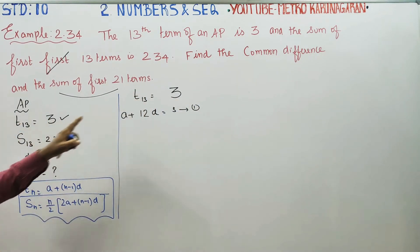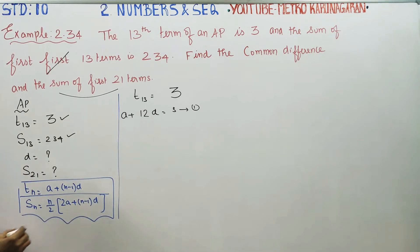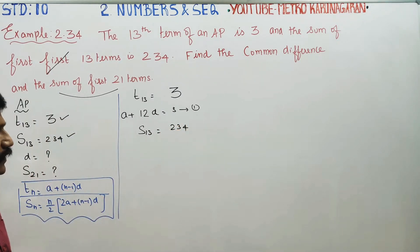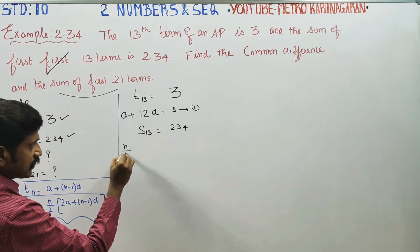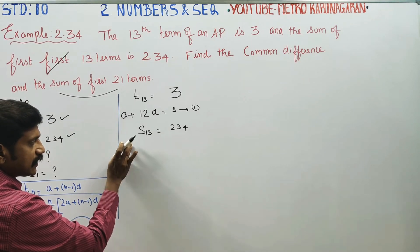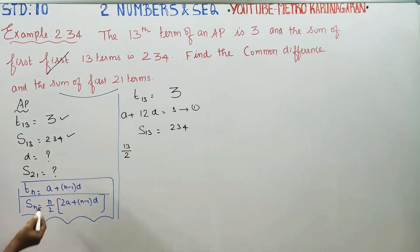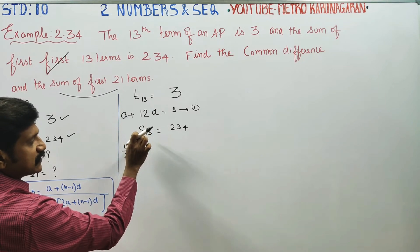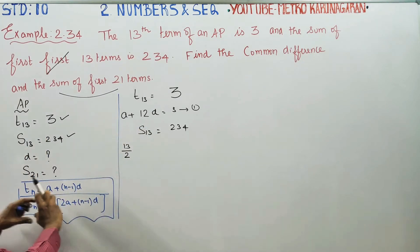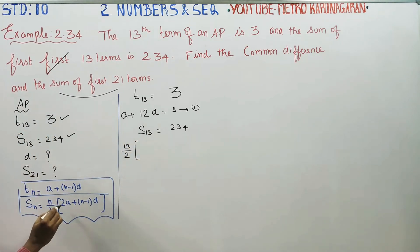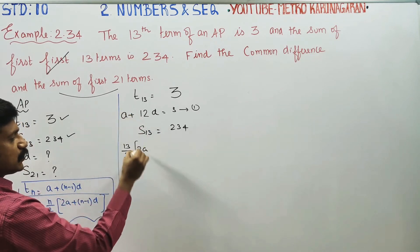S13 is equal to 234. Using the S13 formula: N by 2 times 2A plus 12D.